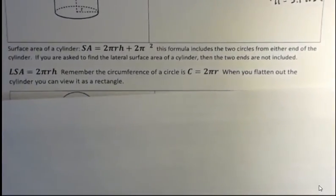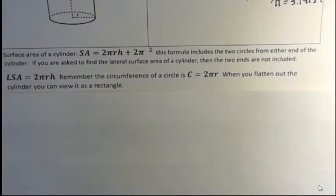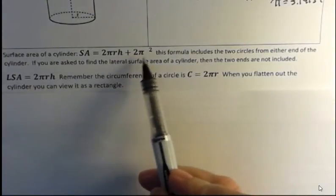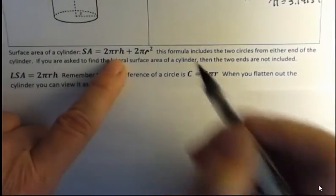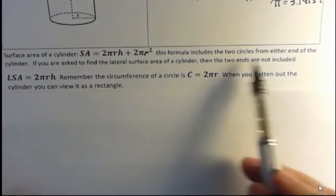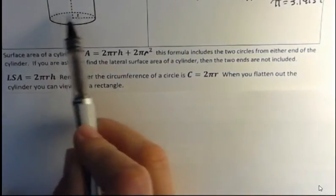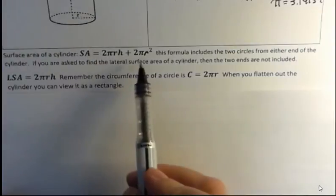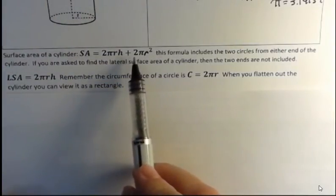When we talk about the surface area of a cylinder, it looks pretty scary at first. 2 pi r h plus 2 pi r squared. I don't know why that little r squared didn't come out. This formula includes two circles from either end of the cylinder. So we have a circle at the bottom, which is pi r squared, and we have a circle at the top, which is pi r squared, and that's where that 2 is, 2 pi r squared.